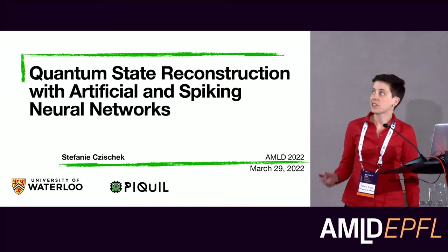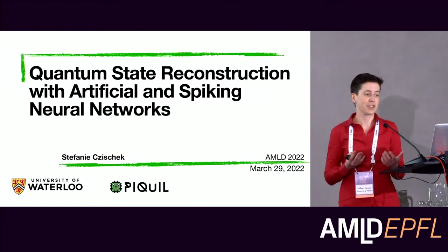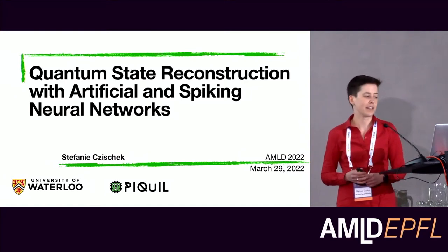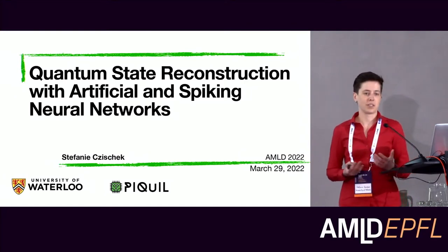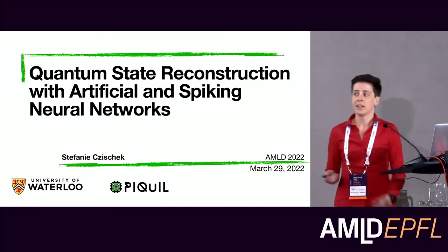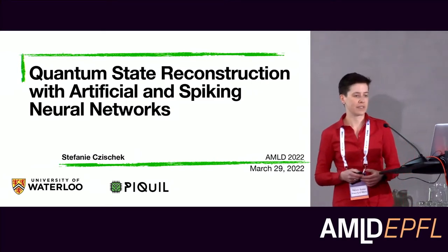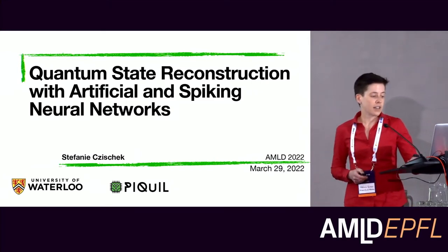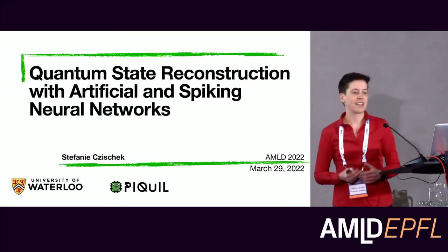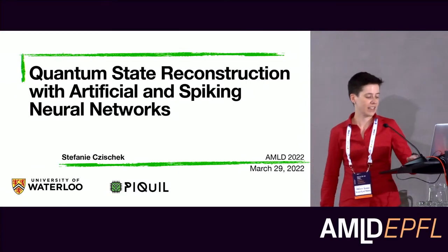Today I will talk about the reconstruction of quantum states, on the one hand with artificial neural networks, which most of us are pretty familiar with. And then I will switch to a topic I'm very excited about but unfortunately fewer people are familiar with: spiking neural networks that can also be used for quantum state reconstruction. I hope to give you some idea of what spiking neural networks are and why we are interested in using them in the field of quantum mechanics.